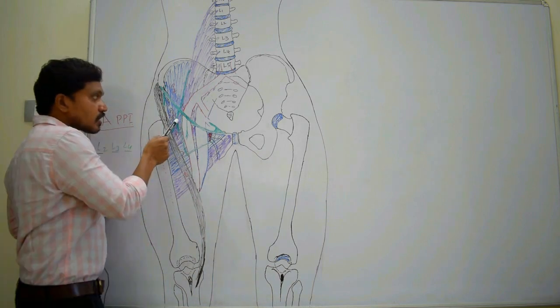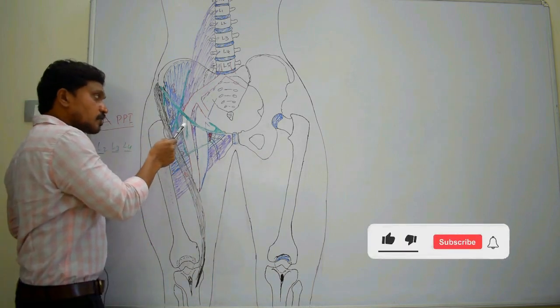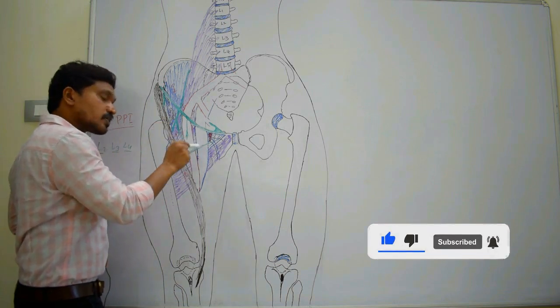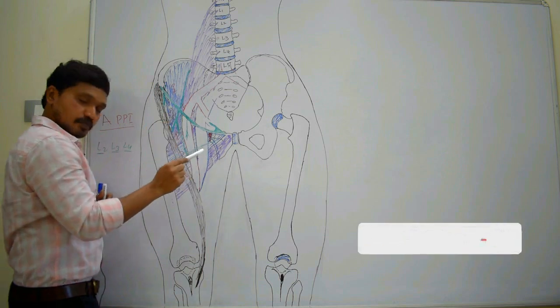Then contents: femoral nerve and its branches, femoral artery and its branches, femoral vein and its tributaries, femoral sheath, and femoral branch of the genitofemoral nerve.